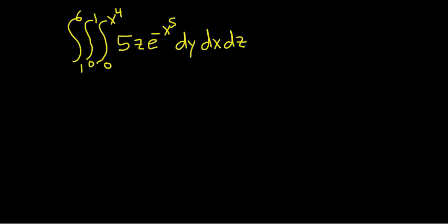In this video, we have a triple integral that we're going to evaluate. The dy here first tells us that we integrate with respect to y first. So we have the integral from 1 to 6, the integral from 0 to 1, and now we're integrating this with respect to y. Now there's no y's here in this expression, so this is just a constant. So when we integrate this with respect to y, we just get this times y. So I'll write it like this, 5z e to the negative x to the fifth times y.